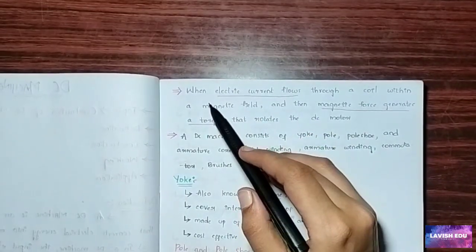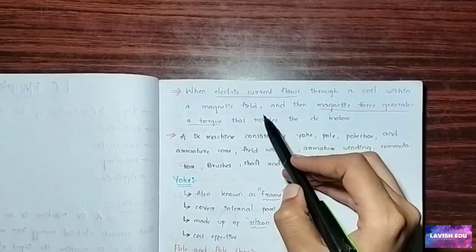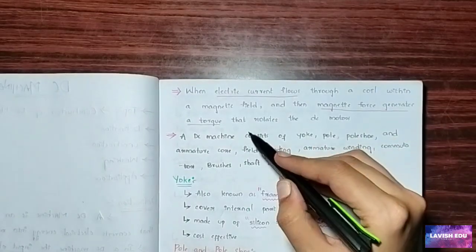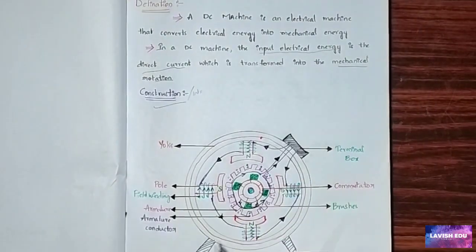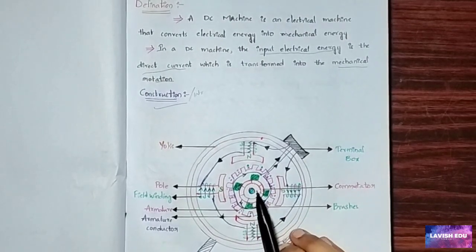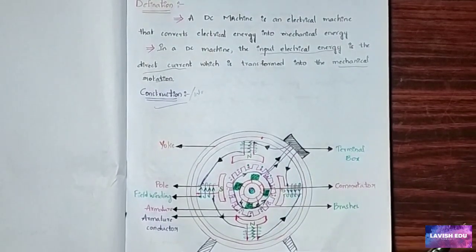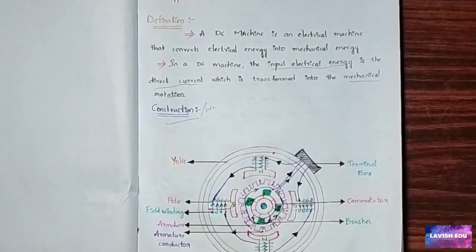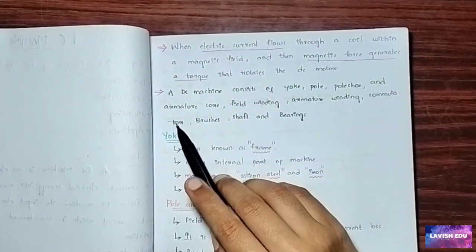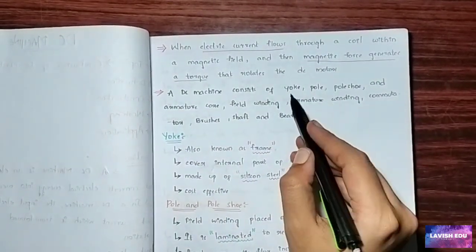Now, another important point: when electrical current flows through a coil within a magnetic field, the magnetic force generates a torque that rotates the DC motor. When the coil rotates, an electrical current is generated in it in the form of magnetic force, which rotates the DC machine as a mechanical motor.